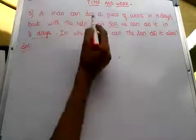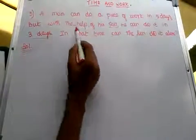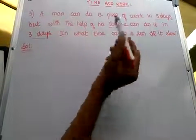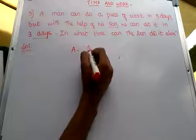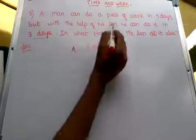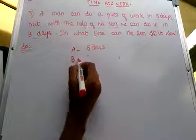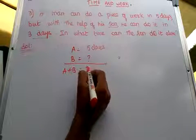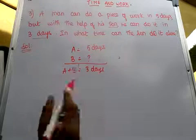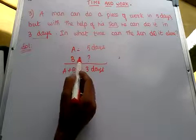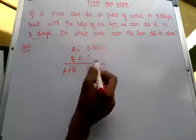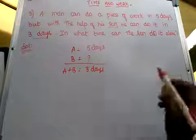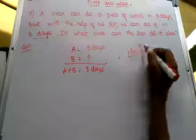Our third problem: a man can do a piece of work in 5 days, but with the help of his son he can do it in 3 days. In what time can the son do it alone? A can complete the work in 5 days. We take the son as B — we don't know B's individual working days, but together A and B complete the work in 3 days. We need to take LCM for 5 and 3, which is 15.